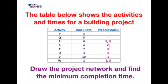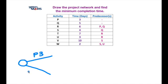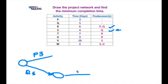Let's look at a slightly larger example. We've got activities P and Q which have no predecessors, so they'll form the start of our project network. We draw a starting node, then P coming off the top for three days and Q coming off the bottom for five days. Activity R has predecessors P and Q, but activity S only has predecessor Q. So for activity S, we place a node at the end of Q and draw S coming off that — activity S requires four days.